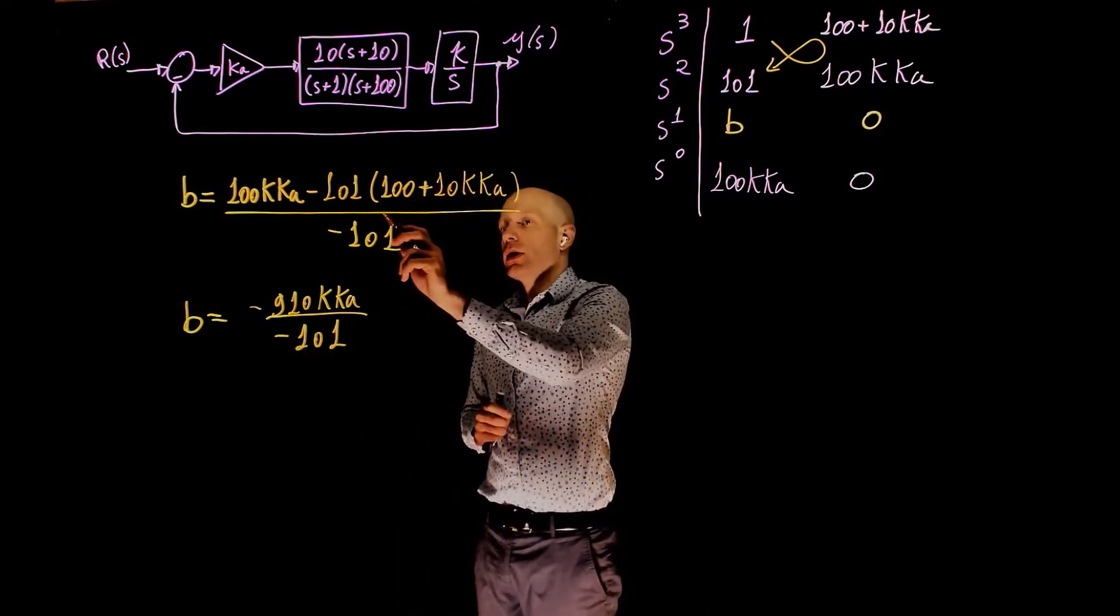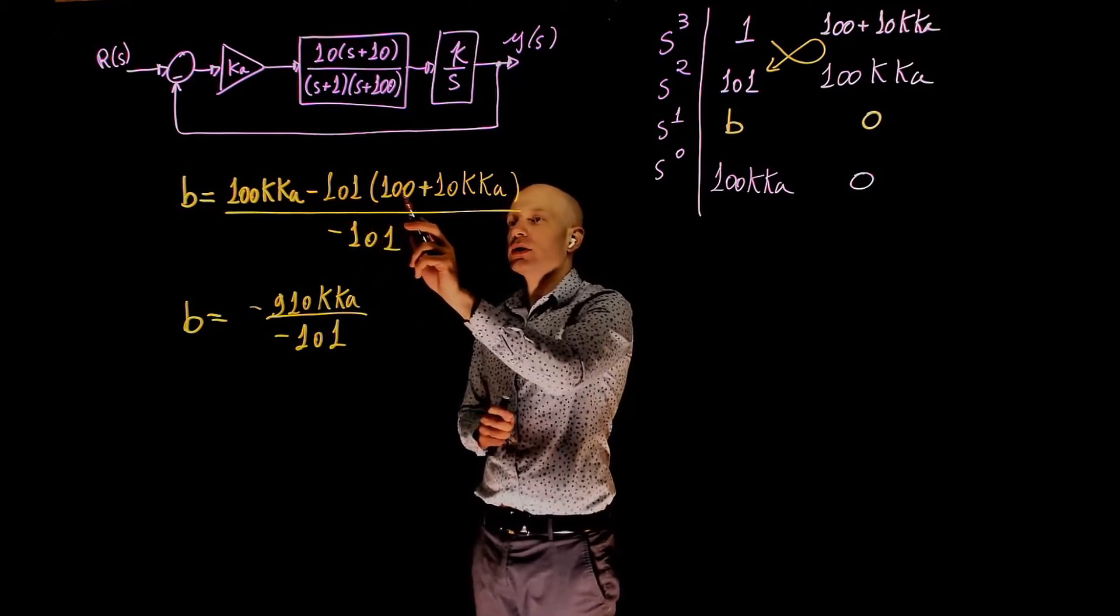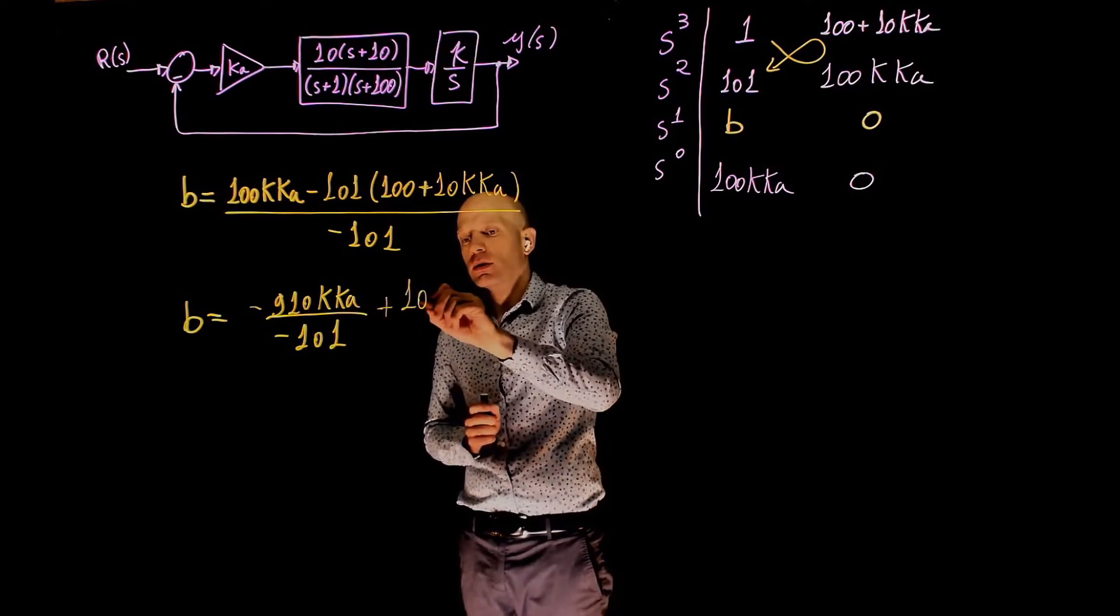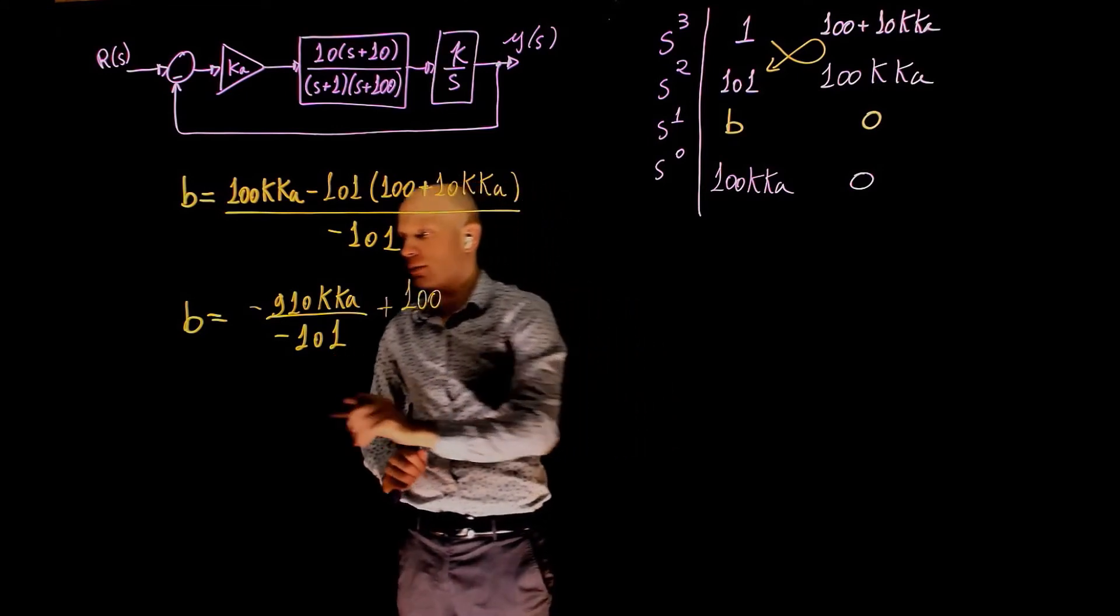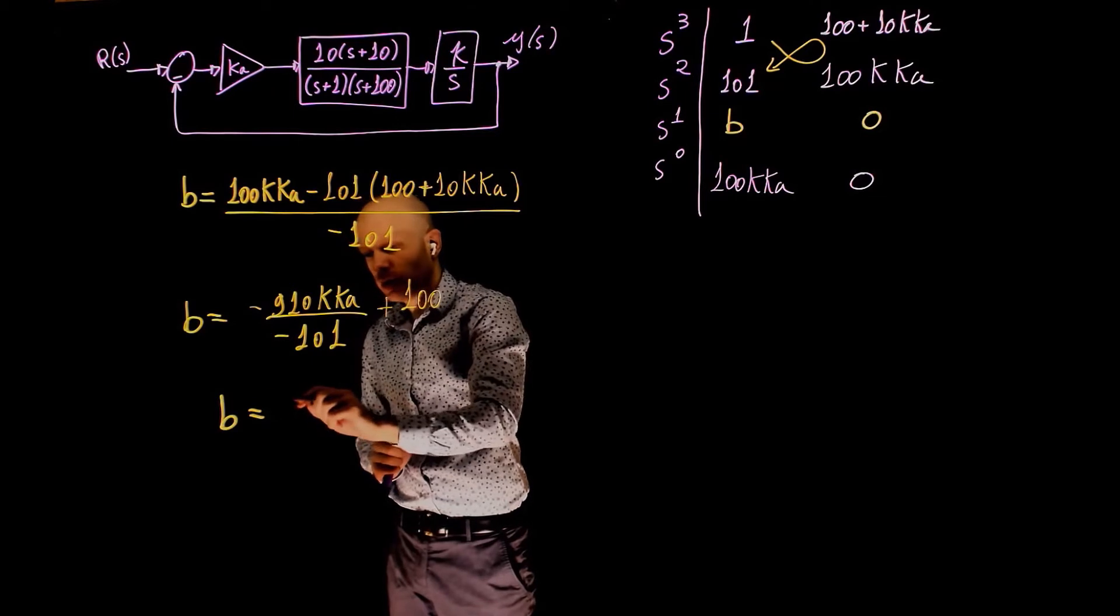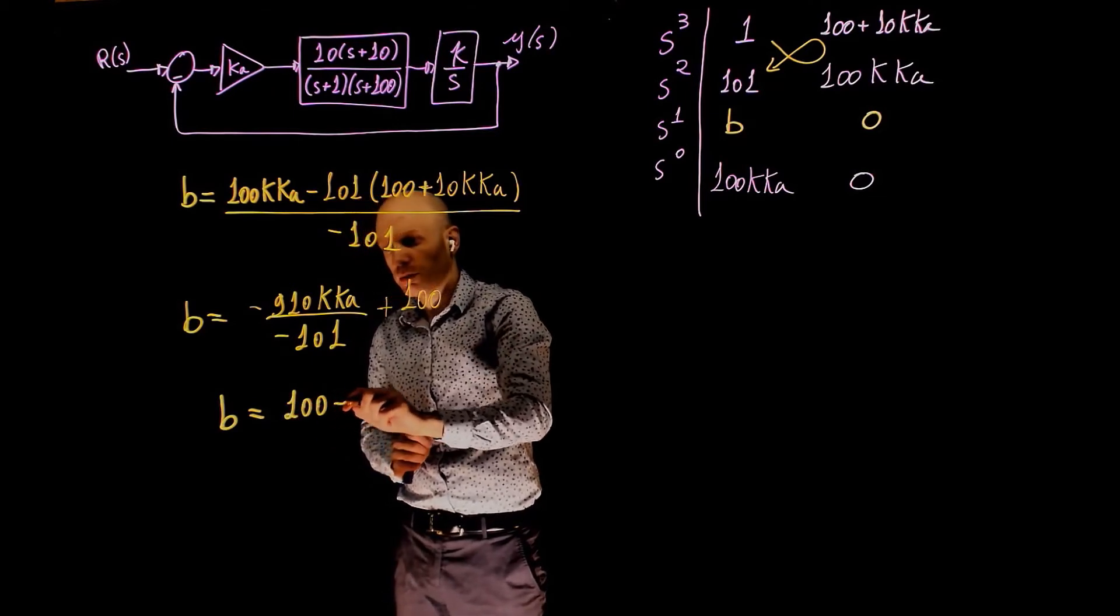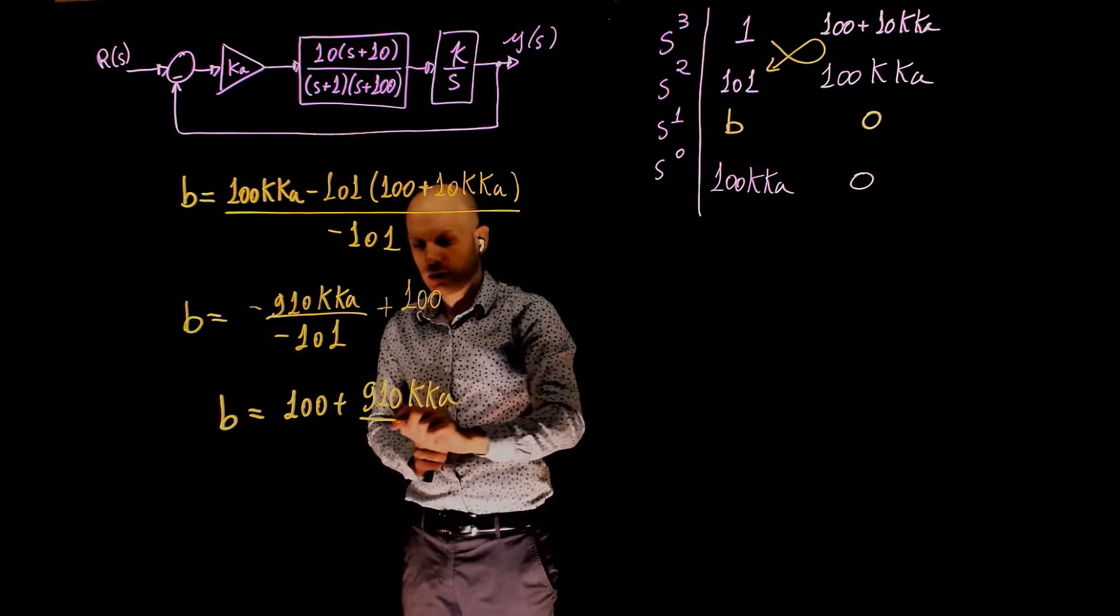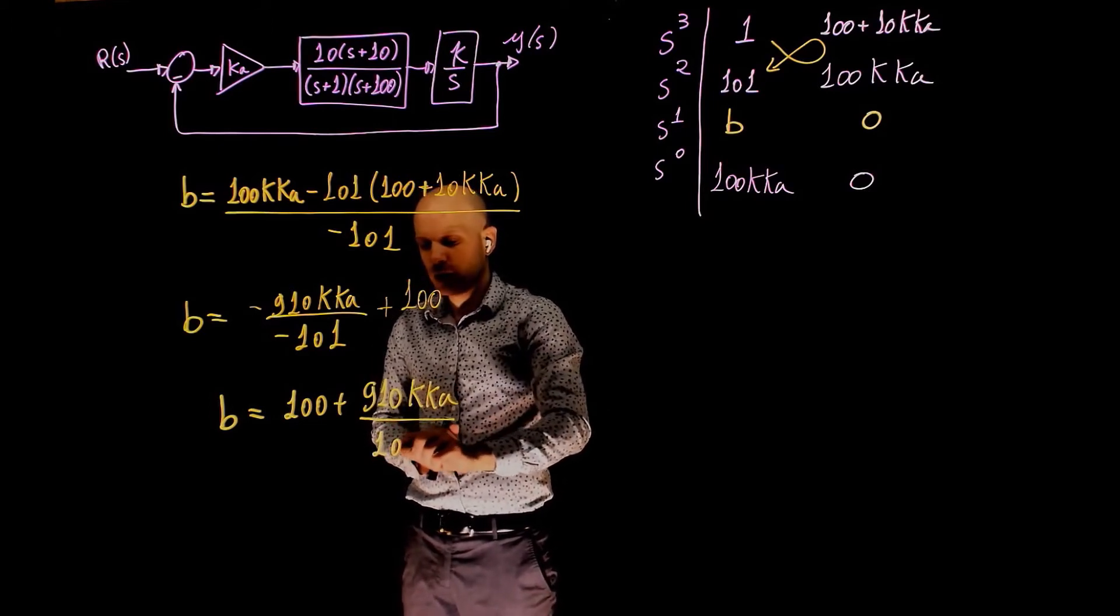And here we have negative 101 times 100 divided by negative 101, that is plus 100. This can simplify now to 100 plus 910kka divided by 101.